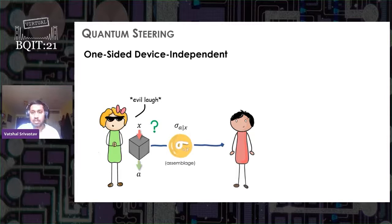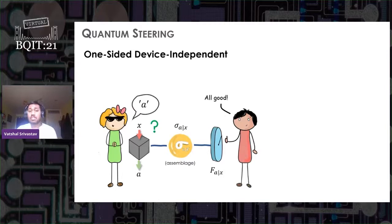Now the state is already present at Bob's side, so once Alice announces her outcome a, Bob can start and perform his side of measurement. Since Bob is a trusted party, he can perform full state tomography on his share of state and reconstruct sigma ax. Now to witness a steering, one needs steering inequalities.